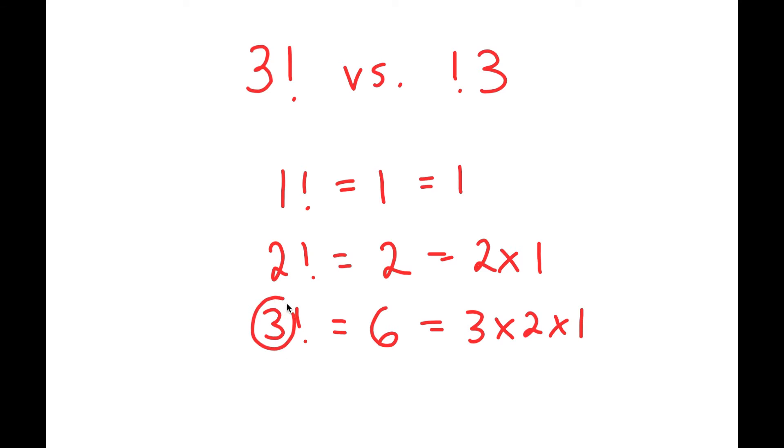So you start with this number here, and you multiply by n minus one times n minus two, until you reach the number one. So four factorial, I want you guys to try this, what would this be? It would be four times three times two times one, which is 24.